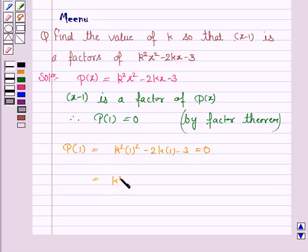So we have k²-2k-3=0. Now this is a quadratic equation in k and we will solve this for k.